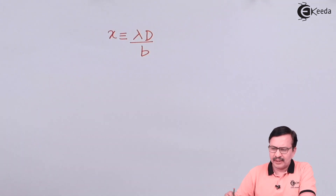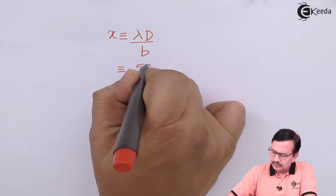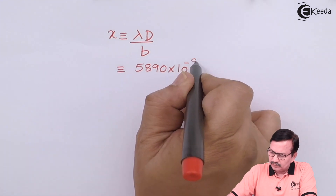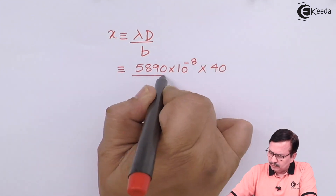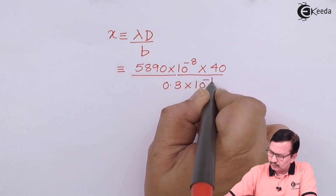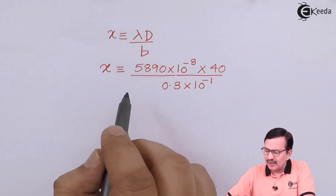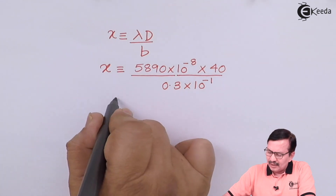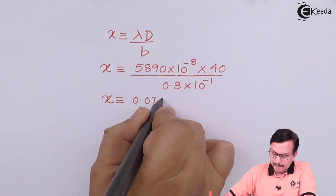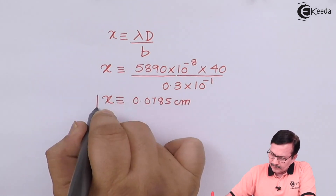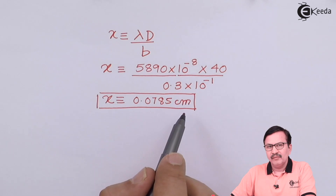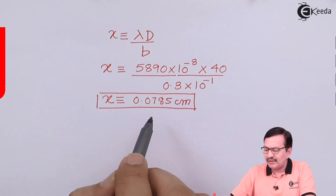x = λ × d / b. This is the equation we have just obtained. Substituting the values into this expression, the value of x turns out to be 0.0785 centimeters, which is the distance between the first dark and the next bright fringe.